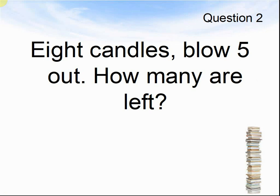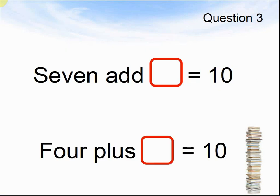Here comes question 3. Seven add something equals ten. Four plus something equals ten. What are the missing numbers? Pause the video until you are ready for the next question.